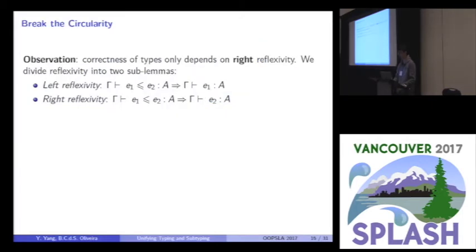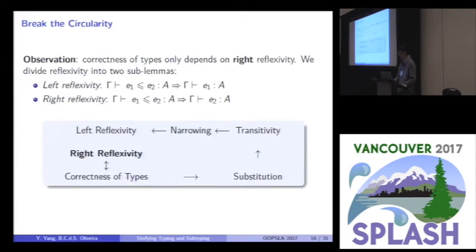So, we have one observation in the paper. The correctness of types, this lemma, only depends on the right reflexivity. Which means that we just use the second conclusion of the reflexivity lemma. So, to deal with this circularity, we can simply divide this lemma, basic lemma reflexivity, into two sub-lemmas here. And then the diagram goes like this. We can break the circularity by only depending on the mutual proofs of right reflexivity and correctness of types. So, the circularity can be broken.